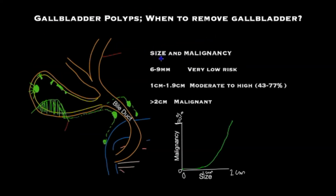Let us examine the association of the size of the polyp with malignancy. If polyps are measured between 6 and 9 millimeters, then the risk of malignancy is very low. However, research has shown that as soon as polyps reach the one centimeter mark up to 1.9 centimeters, there is a moderate to high risk of cancer. Any polyp equal to or bigger than one centimeter should mandate removal of the gallbladder, because the risk of cancer starts to rise significantly as shown in this graph.